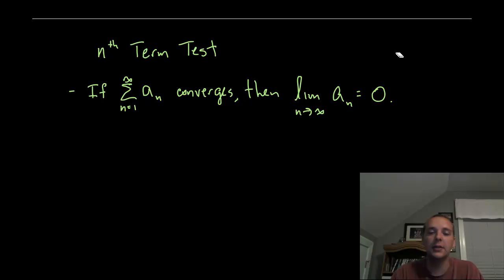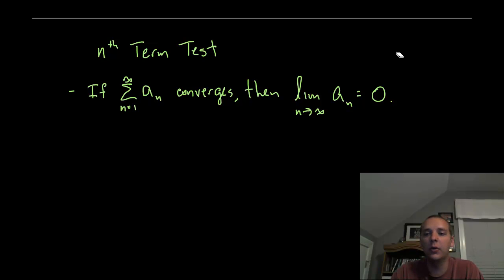In plain English, that means the terms have to get smaller if the series is going to converge. So if you can show for a given series that the terms aren't going to zero — maybe they're alternating or maybe they're growing — then you can definitively say that the series can't converge. There's no way, because the terms don't go to zero.